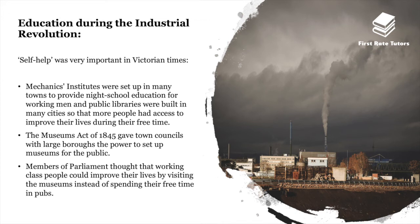The concept of self-help was really important during the Victorian era. Mechanics' institutes were set up in many towns to provide night-school education for working men, and public libraries were built in many cities so that more people had access to improve their lives in their free time. The Museums Act of 1845 gave town councils the power to set up museums for the public, with MPs believing working-class people could improve their lives by visiting museums rather than spending time in pubs.